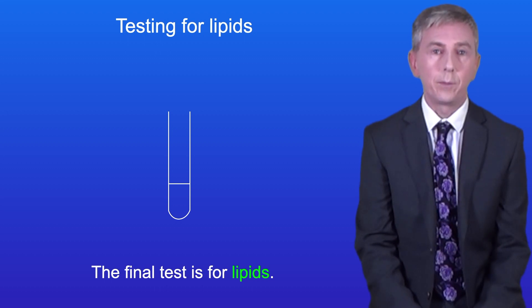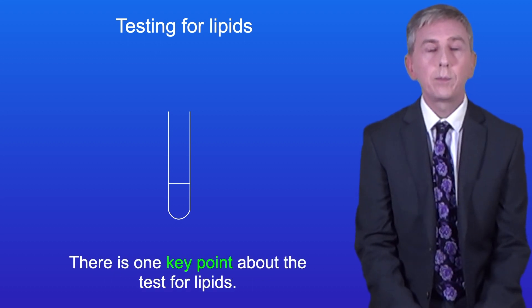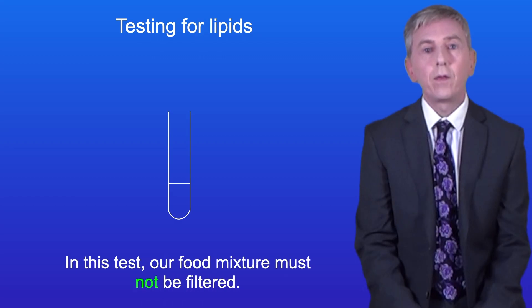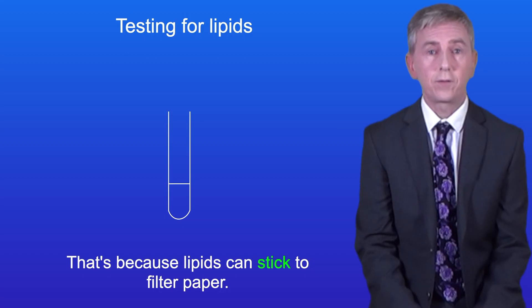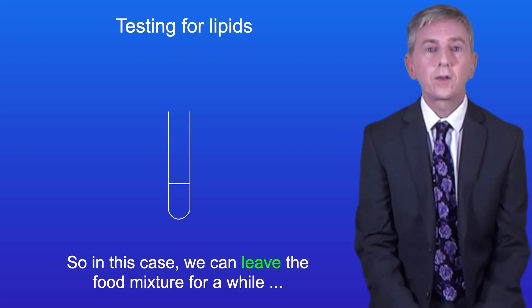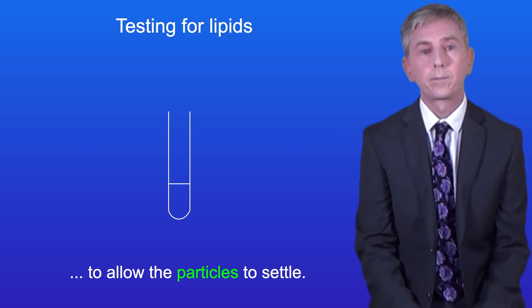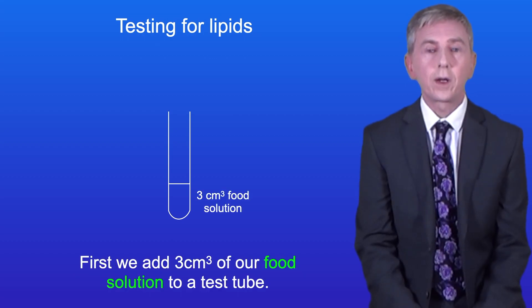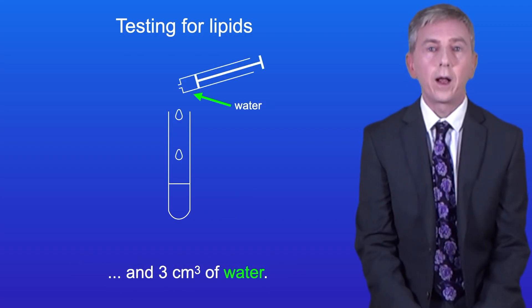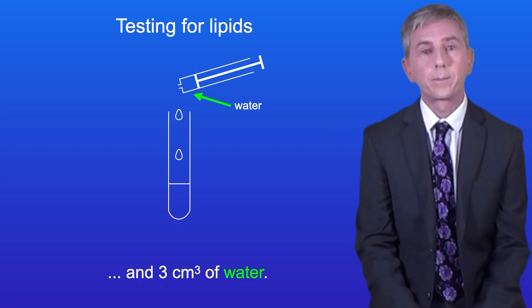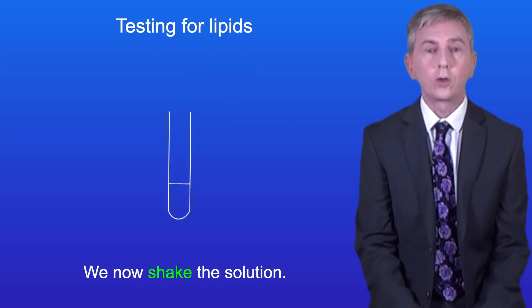The final test is for lipids. One key point: in this test our food mixture must not be filtered, because lipids can stick to filter paper. So we can leave the food mixture for a while to allow the particles to settle. We add 3 cm³ of a food solution to a test tube, then add 3 cm³ of ethanol and 3 cm³ of water, and shake the solution.